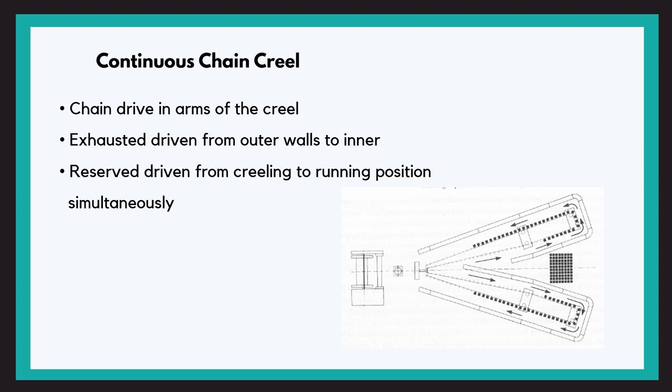In all three types — the truck creel, the swivel frame creel, and the continuous chain creel — time is saved in refilling the supply packages. However, yarns from new packages have to be tied, that is knotted or spliced, with the yarns unwound from the previous packages.